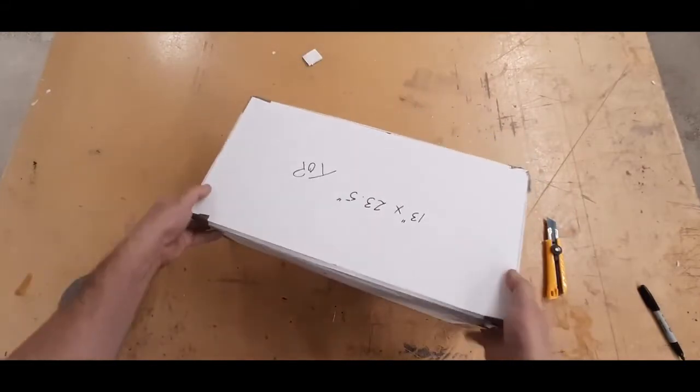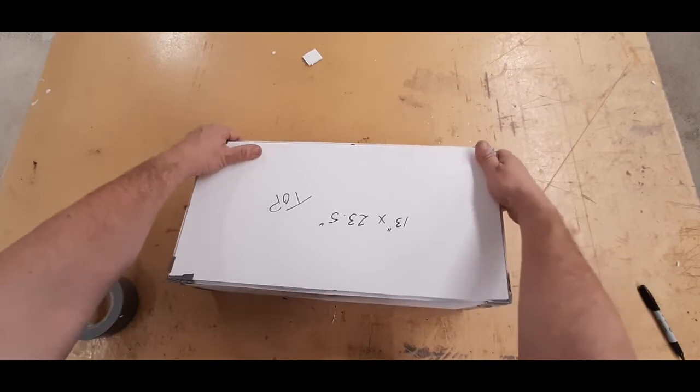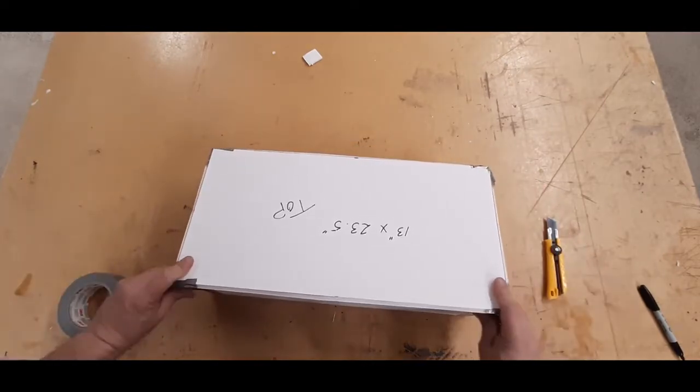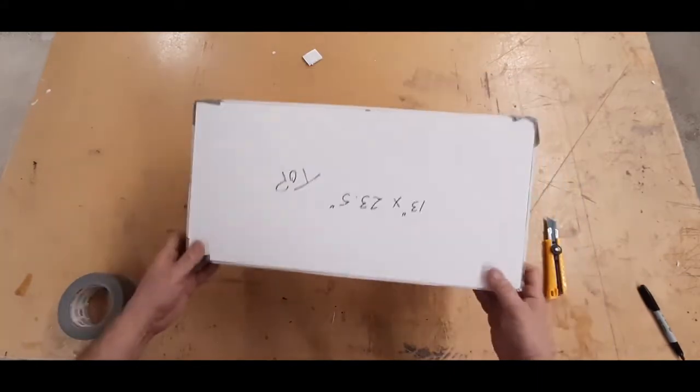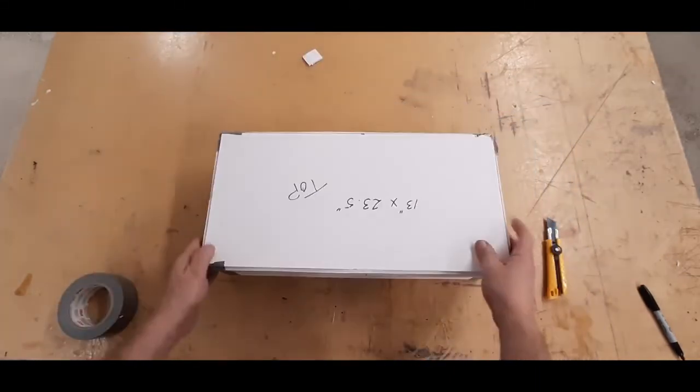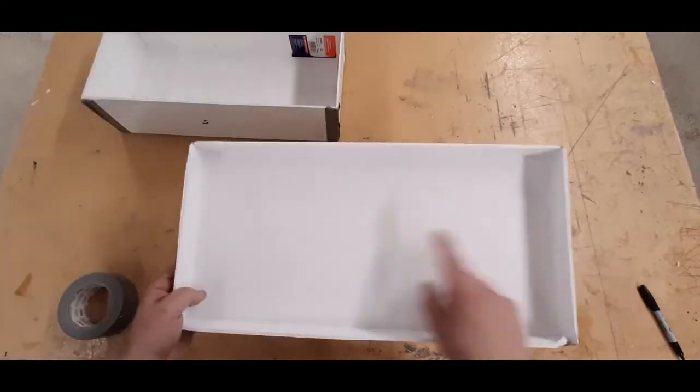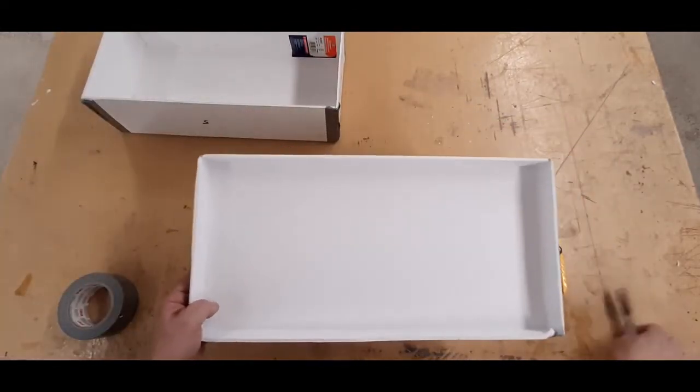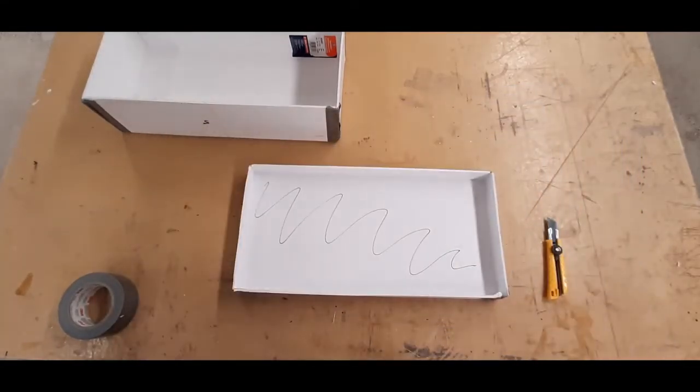Now you have a nice snug lid for the box. Apply foil only to the top surface of the box, not to the inside walls.